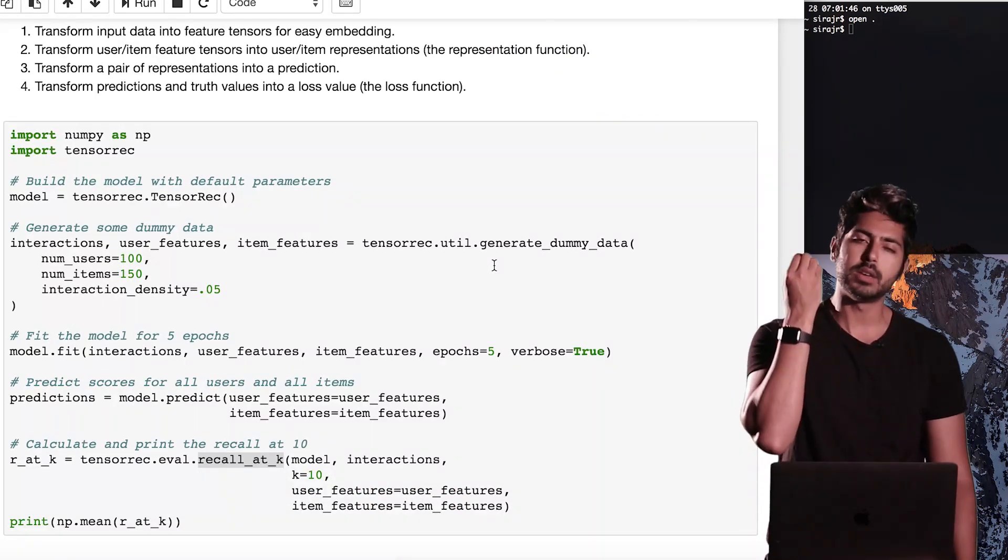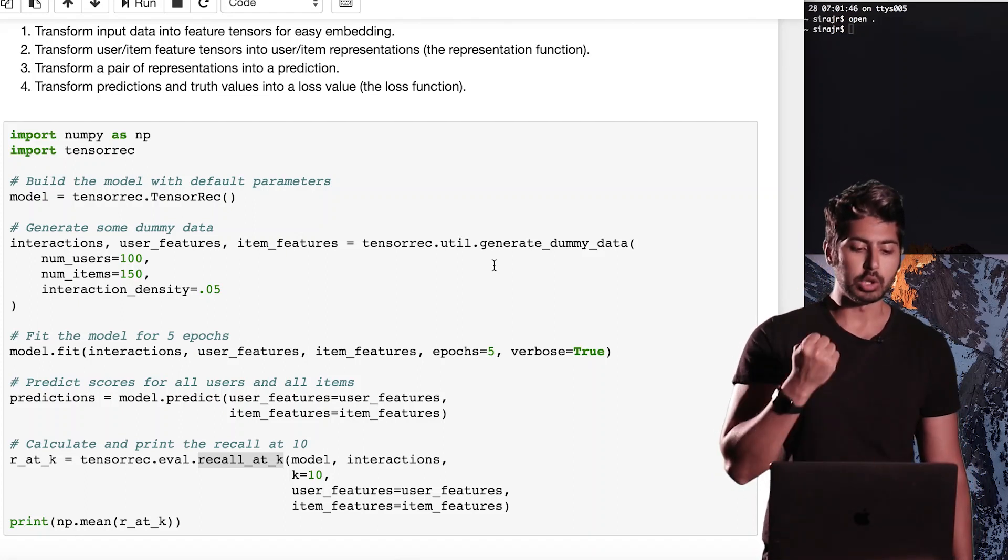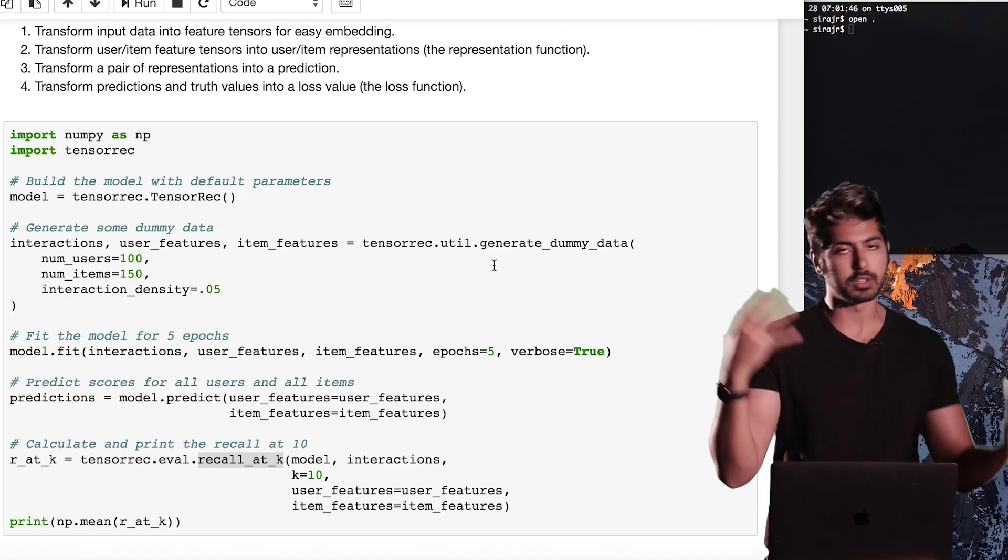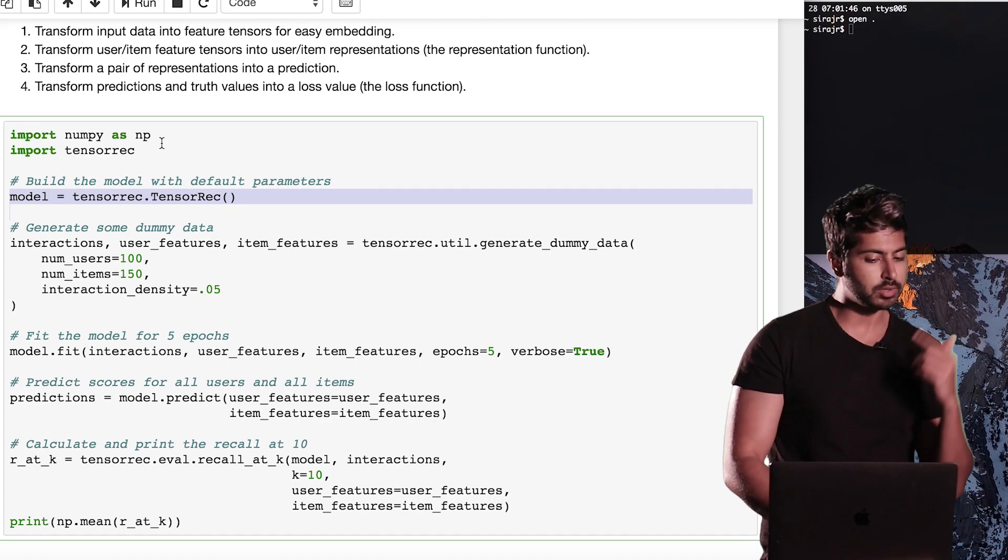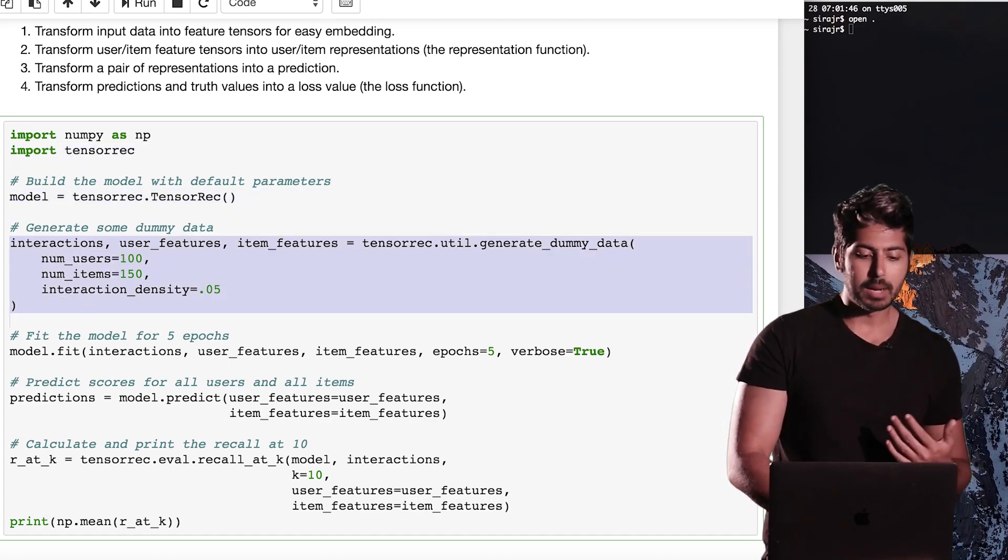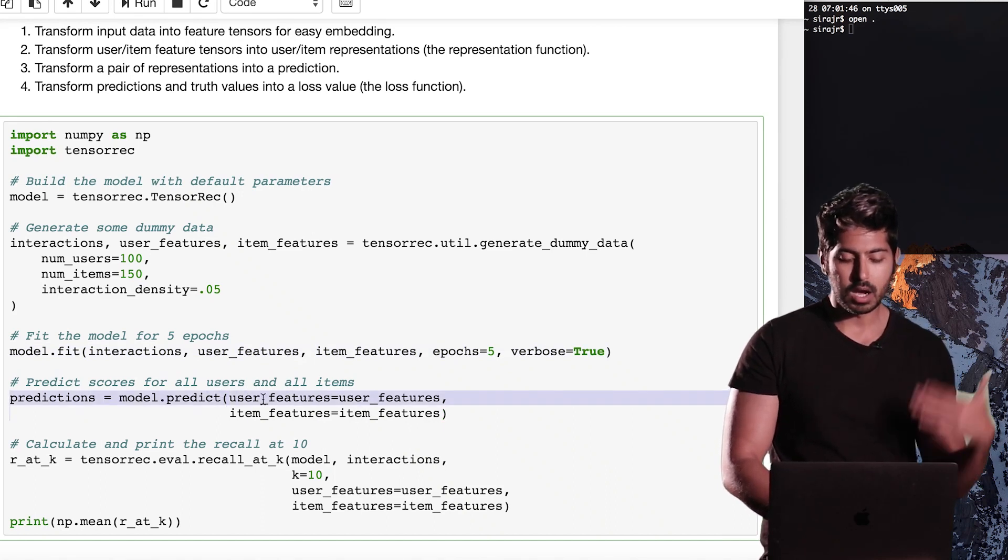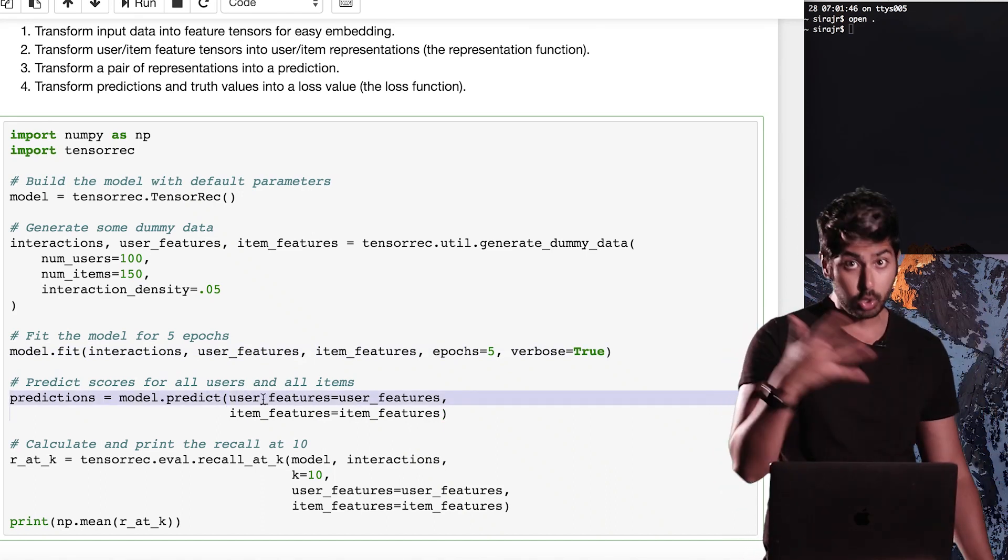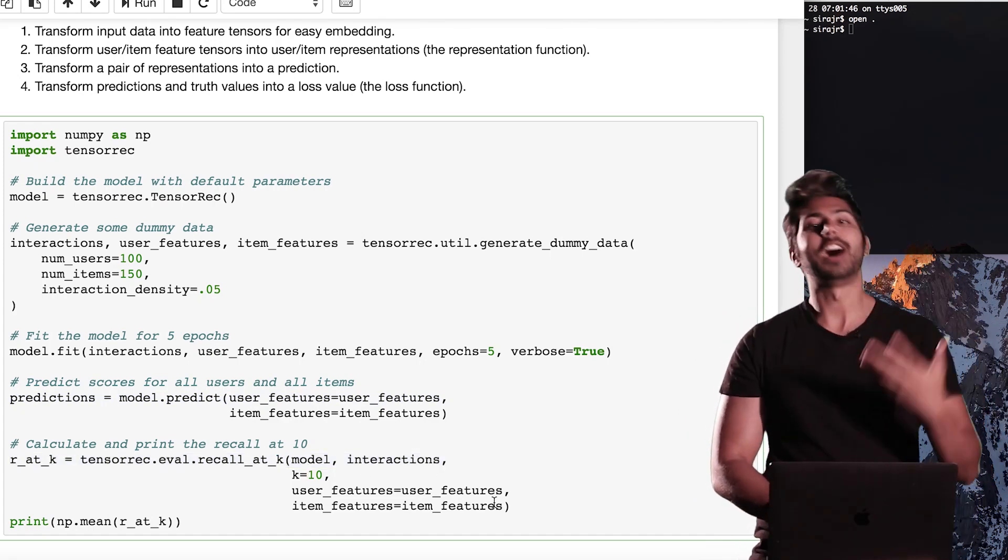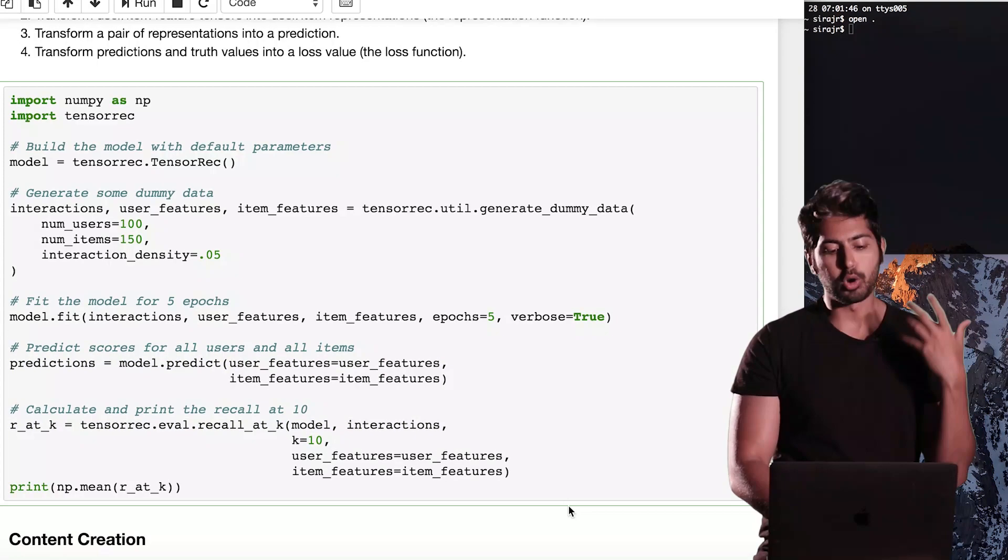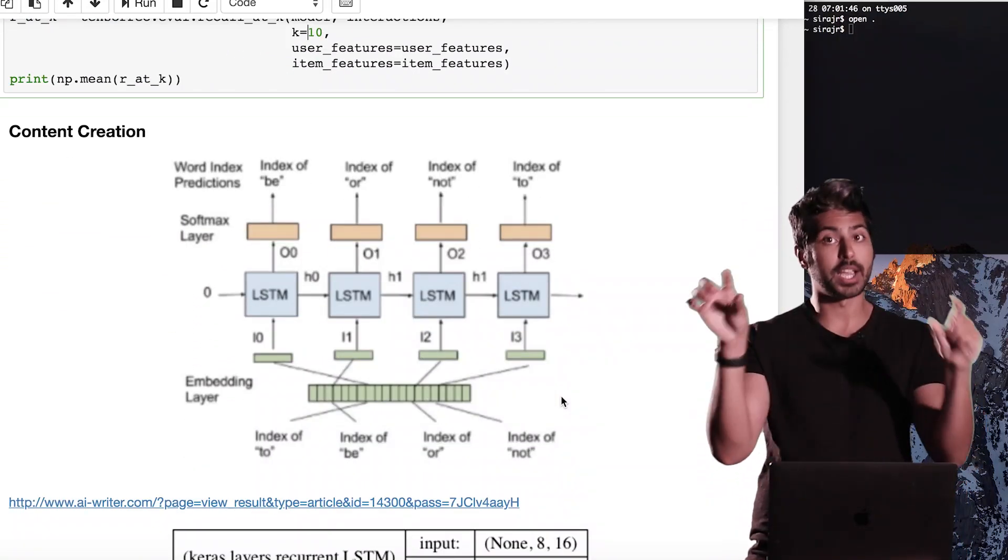So here is a very simple programmatic example of us using TensorREC to recommend users a specific type of data. This could be ads, it could be anything. So we build the model in a single line. We generate some dummy data. We fit the model on that data. We predict what the scores would be based on the given data. And then we use percentage recall as an evaluation metric to see how good it's doing on testing data sets. That's it. TensorREC. Check it out.